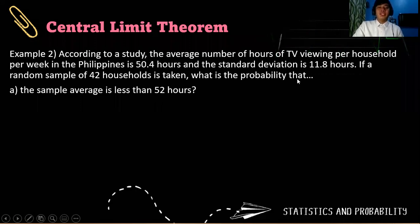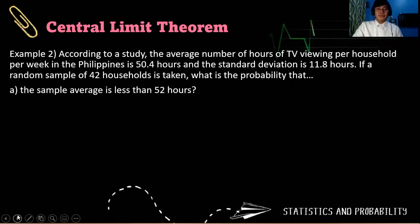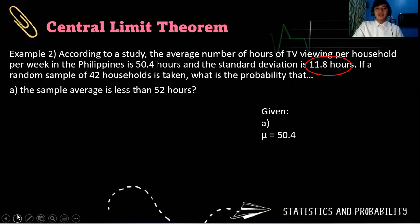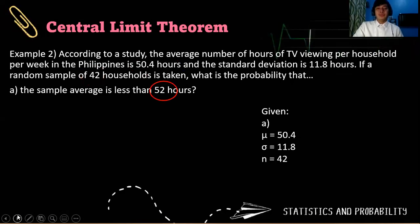If a random sample of 42 households is taken, what is the probability that the sample average is less than 52 hours? To answer that, the given are: μ is 50.4, our σ or population standard deviation is 11.8 hours, our N is 42, and our raw score is 52.